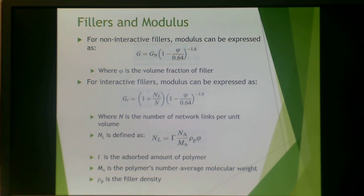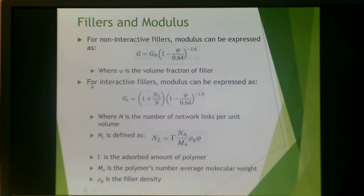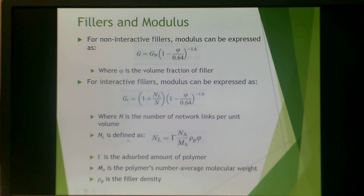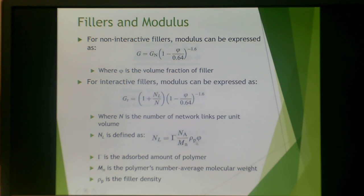For a non-interactive filler, modulus can be expressed as the network modulus scaled by the volume fraction of the filler to give an overall rigidity modulus. For interactive fillers, the modulus is expressed slightly differently as the rigidity modulus multiplied by (1 + N_L / N), times the same volume fraction term. Here, N is the number of network links per volume, and N_L is defined using Γ (the absorbed amount of polymer), N_n (the polymer's number-average molecular weight), and ρ_P (the filler density), along with the volume fraction.